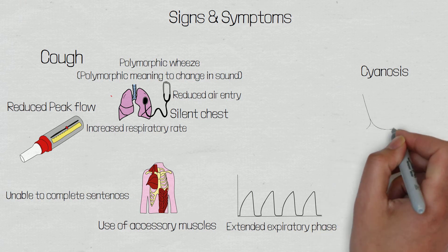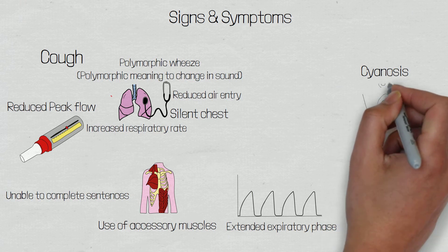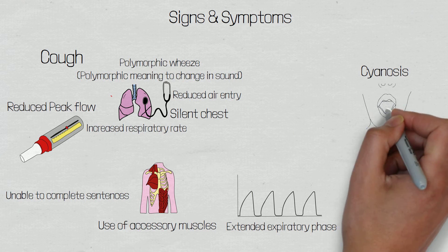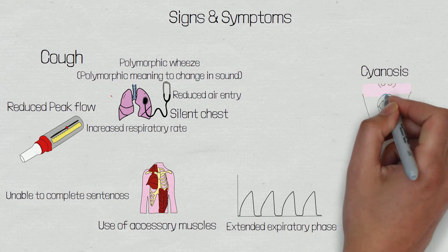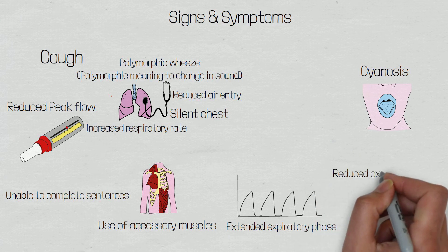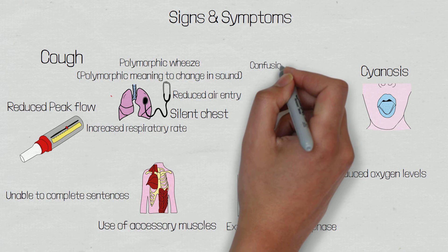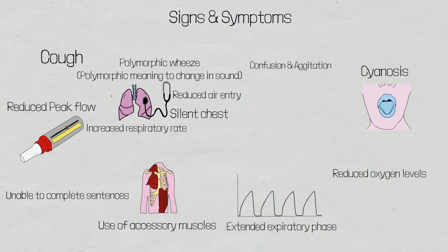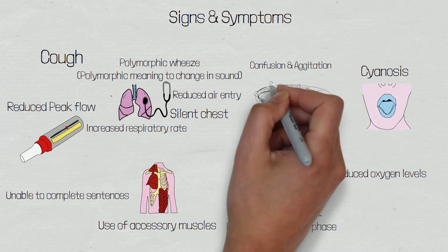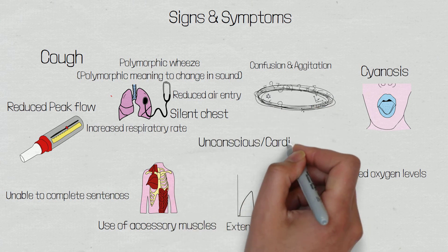Cyanosis, which is a blue discolouration, which can be seen centrally, such as the lips or tongue, or peripherally, such as the fingers. This is caused by a lack of oxygen bound to red blood cells. Patients may have reduced oxygen saturations as ventilation starts to fail. They may have confusion and agitation as they become hypoxemic. And in severe cases, this can lead to unconsciousness and cardiac arrest.